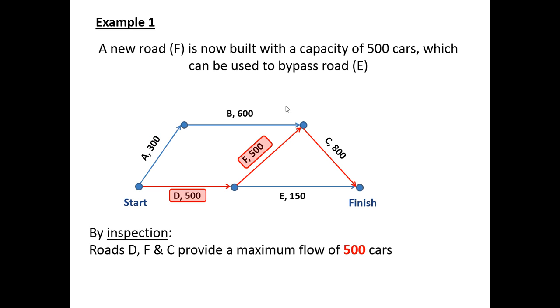Likewise if we go from D through F through to C, 500 can flow on road D and all of those continue on road F, and road C has a capacity of 800. So we're restricted by the 500 minimum value. So roads D, F and C have a maximum flow of 500.